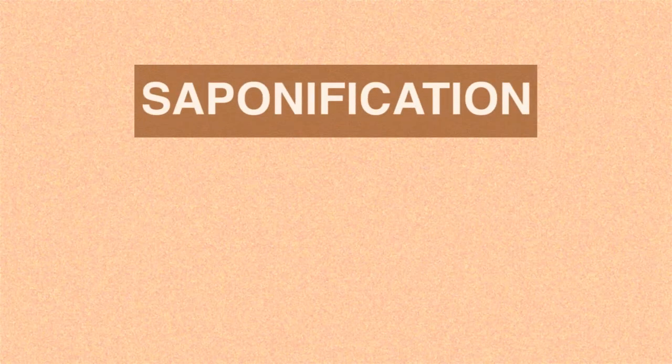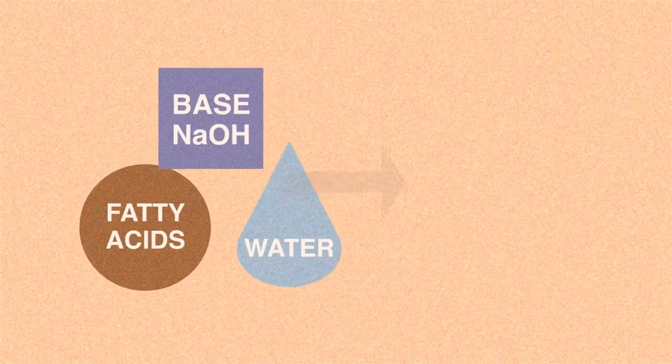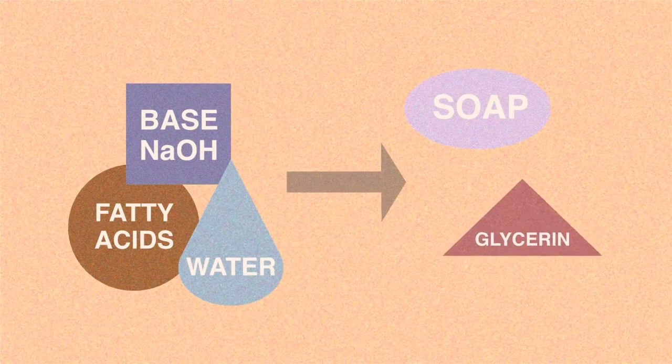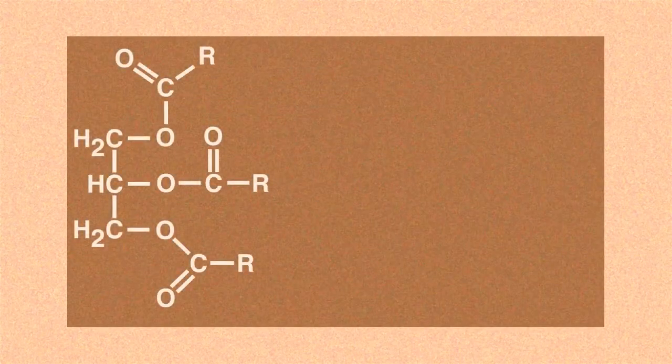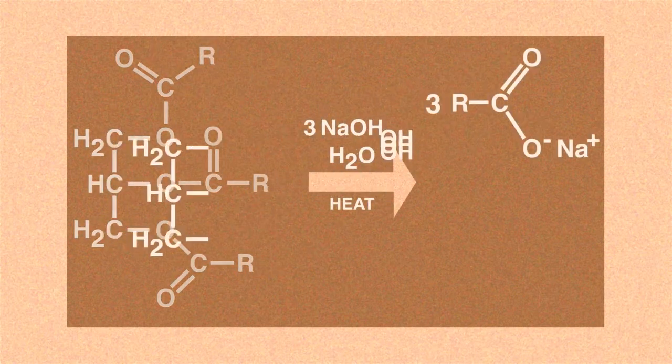Soaps have always been made in a similar way, using hydrolysis. The fancy word for this process is saponification. Chemically, fatty acids or oils combine with a base, typically sodium hydroxide and water. The result of this process is soap and a chemical called glycerine. This is seen in the chemical reaction where the fatty ester highlighted is broken down to form a carboxylate salt and glycerine.